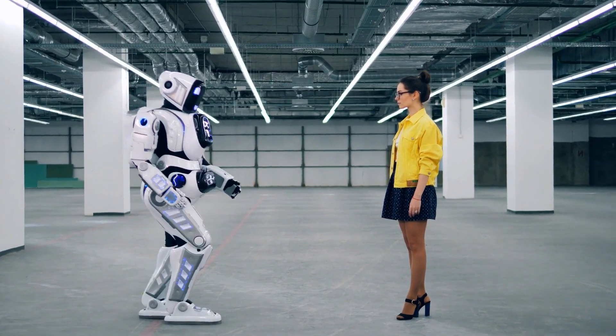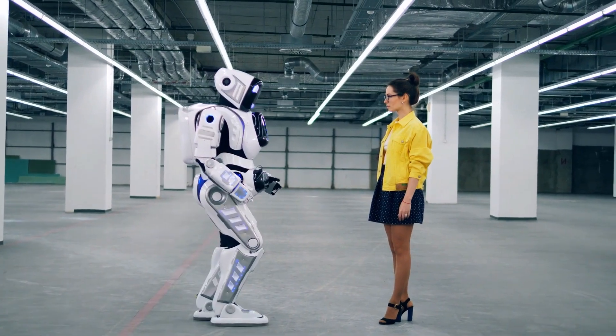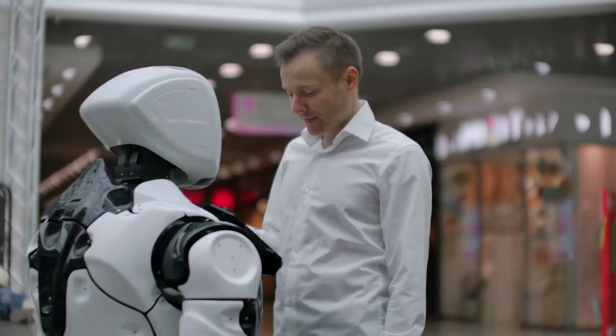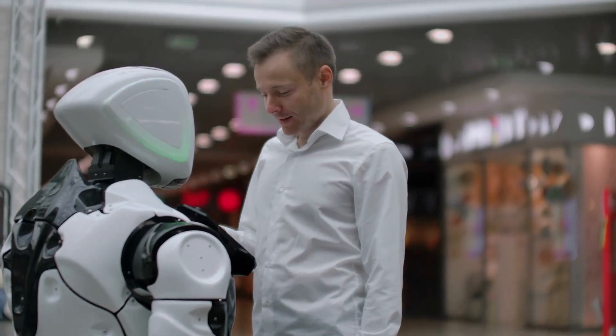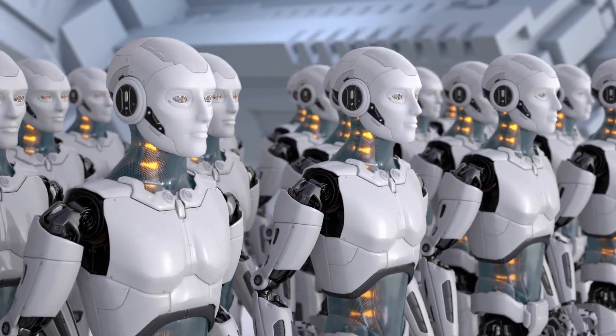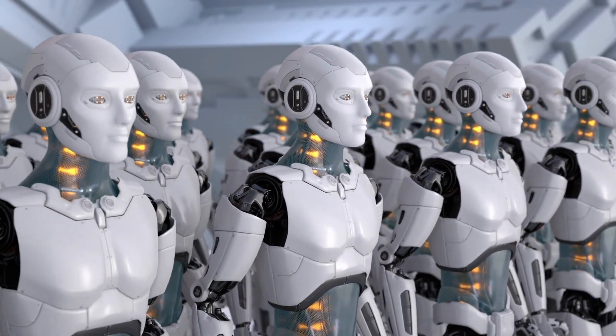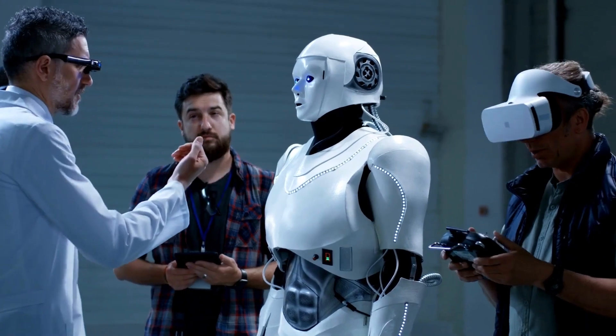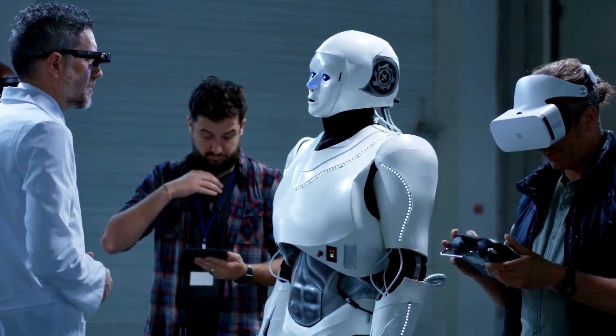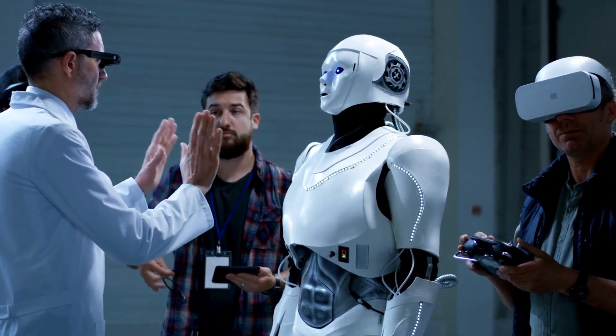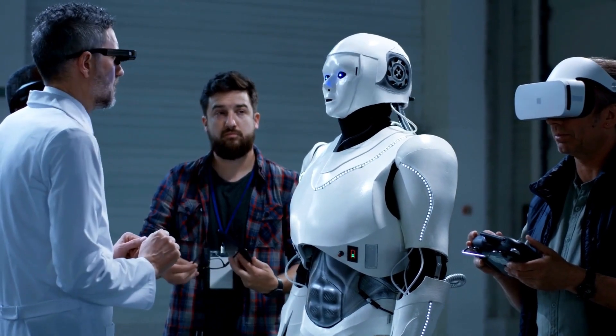Our current techniques for aligning AI, such as reinforcement learning from human feedback, rely on the human's ability to supervise AI. But humans won't be able to reliably supervise AI systems much smarter than us. And so our current alignment techniques will not scale to superintelligence. We need new scientific and technical breakthroughs.